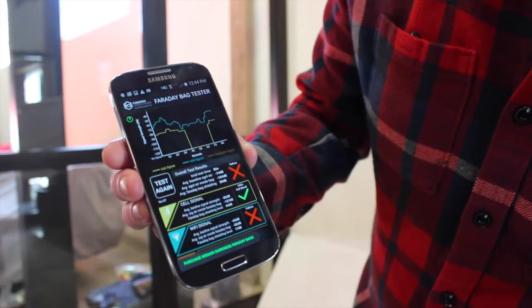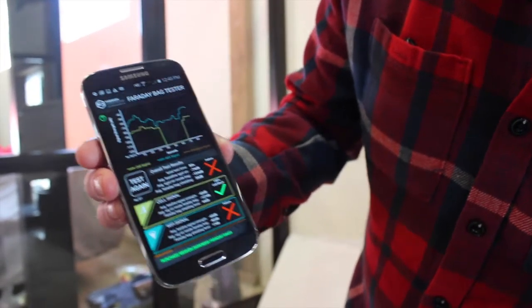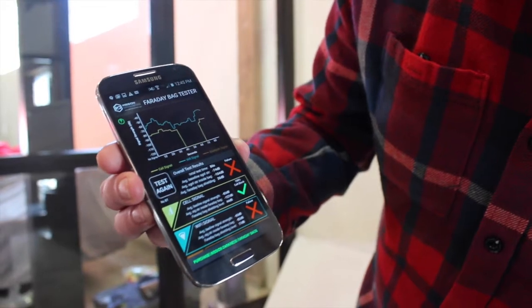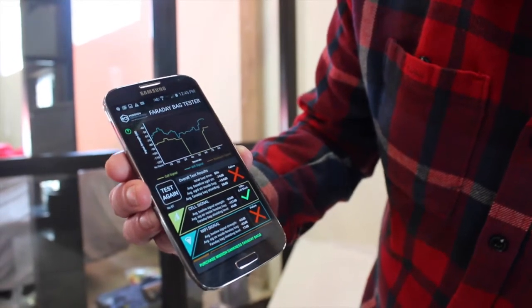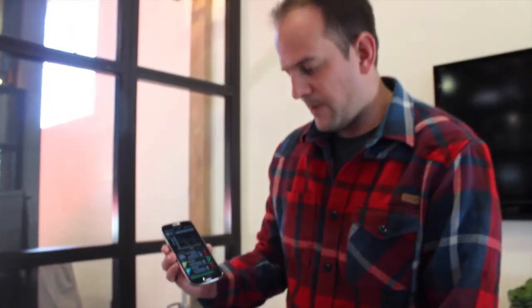But you can see that when it was put into the bag it only slightly dropped off the WiFi signal about 17 dBs. So for the most part, you want to block cell signal, good bag. You want to block a WiFi signal, not the best bag to use.